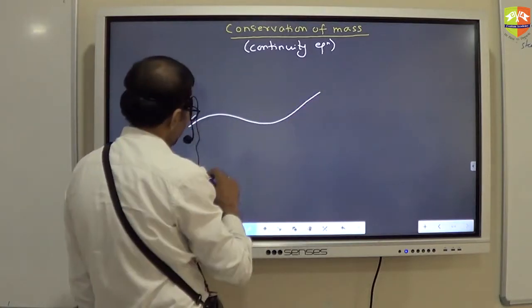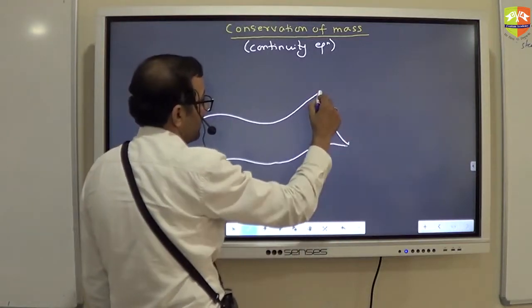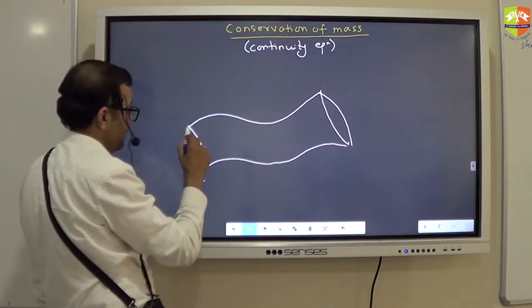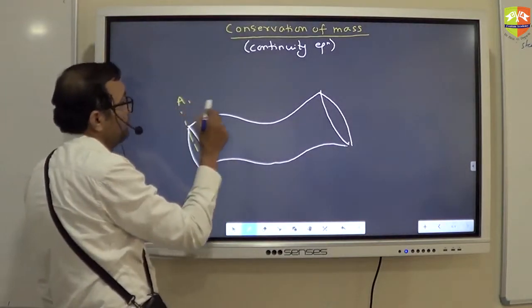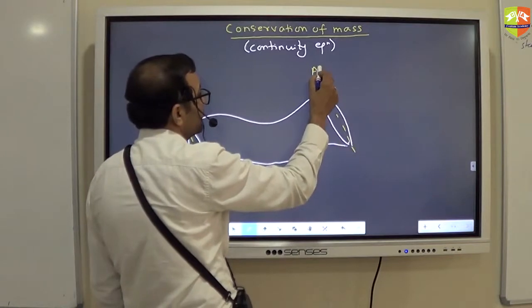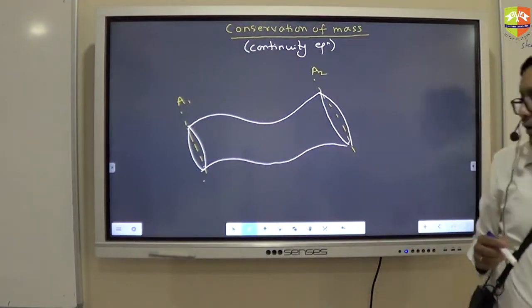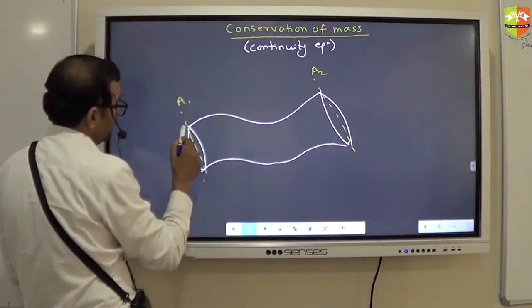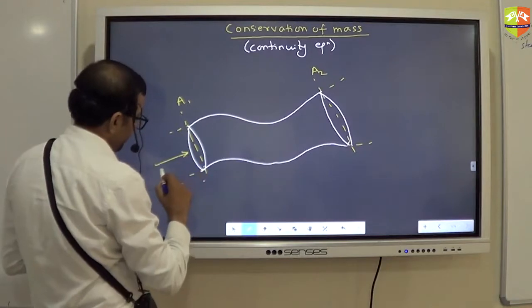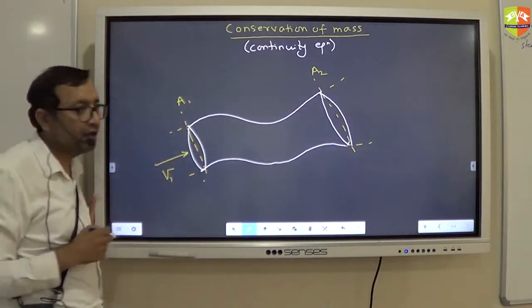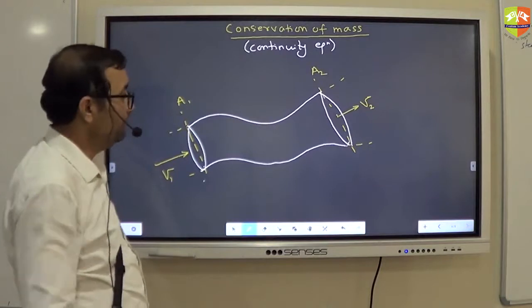Alright? So here is a pipe let us say. This cross section area is let us say A1 and that cross section area is let us say A2. Now other parameters are also given. It is a part of a bigger pipe by the way. Other parameters are given like this. The fluid enters with velocity V1 from here and it goes from here with velocity V2.